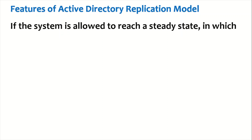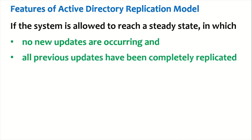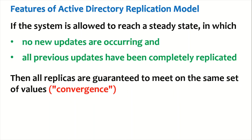Convergence means: if a system is allowed to reach a steady state in which no new updates are occurring and all previous updates have been completely replicated, then all the replicas are guaranteed to meet the same set of values — this is called convergence. However, this situation is very rare, as there are continuous changes happening on domain controllers and replication is always taking place.